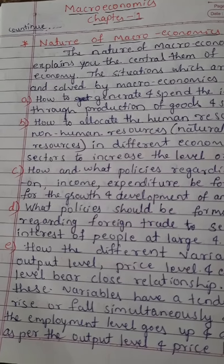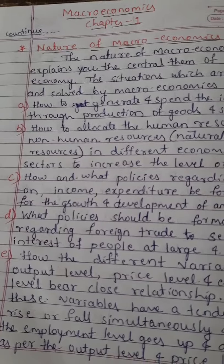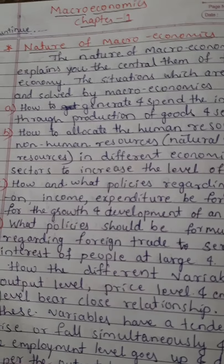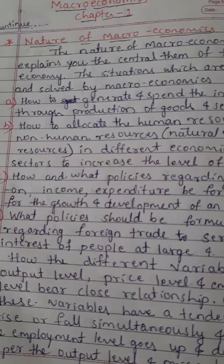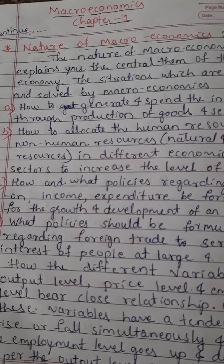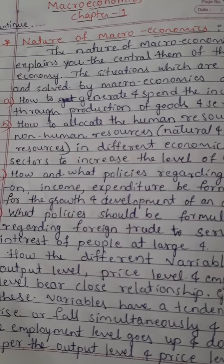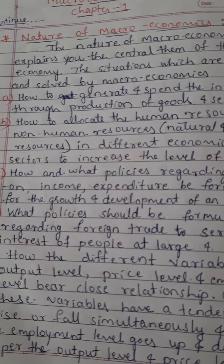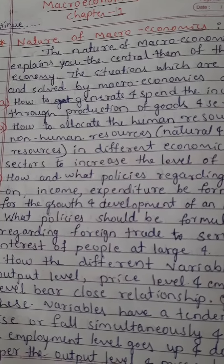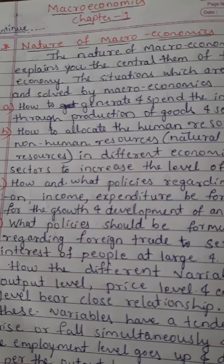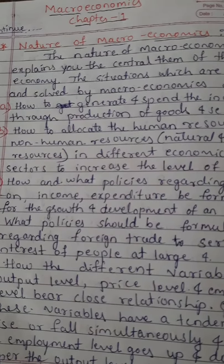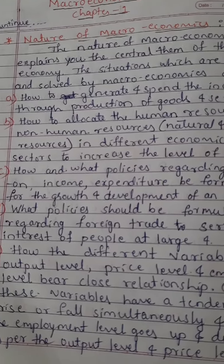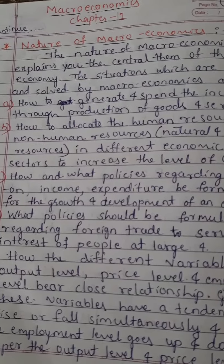The first nature of macroeconomics: how to generate and spend the income through production of goods and services — how the nation generates and spends its income. The second nature: how to allocate human resources and non-human resources — meaning natural resources and man-made resources — across different economic sectors to increase the level of GDP.